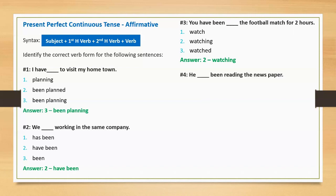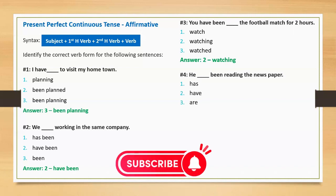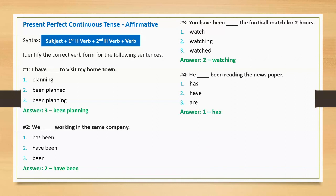Sentence four: 'He blank been reading the newspaper.' Options: has, have, and are. Correct answer: has. Full sentence: 'He has been reading the newspaper.'